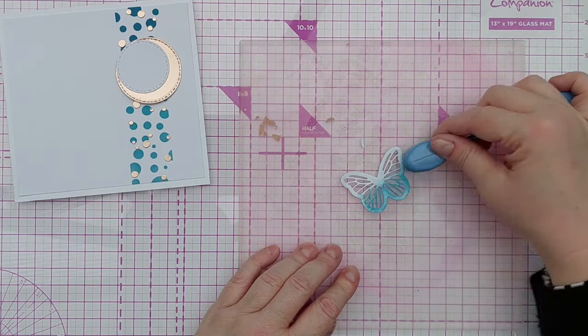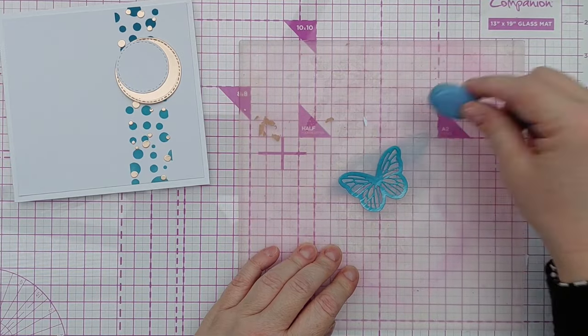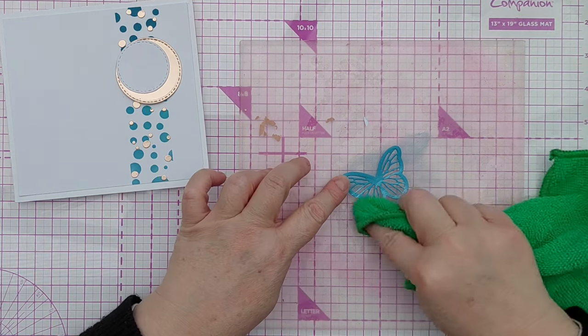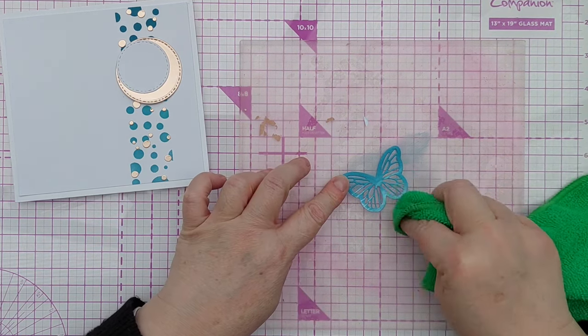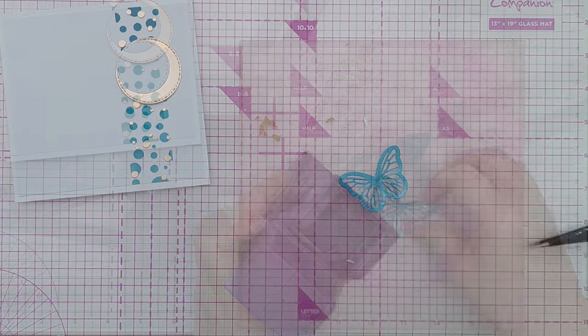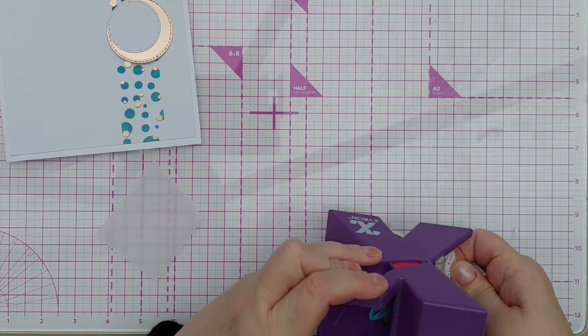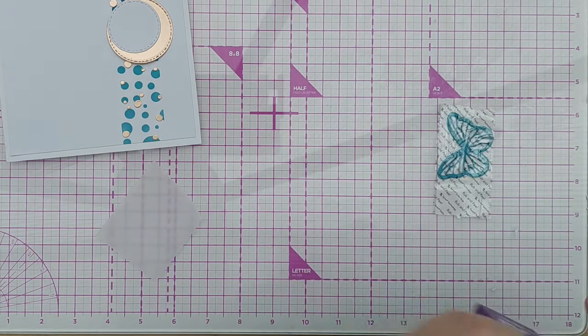So I die-cut my butterfly from smooth cardstock, used the ink that was still on the blending tool, and just blended that across the butterfly again, a sort of ombre going from dark to light, top to bottom. I then ran that through my Xyron sticker maker to give it a sticky back.